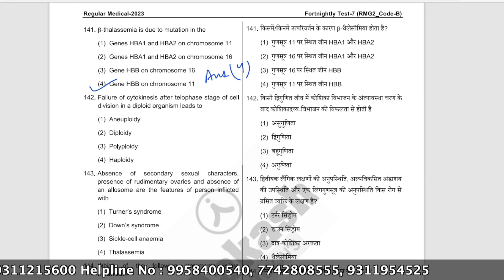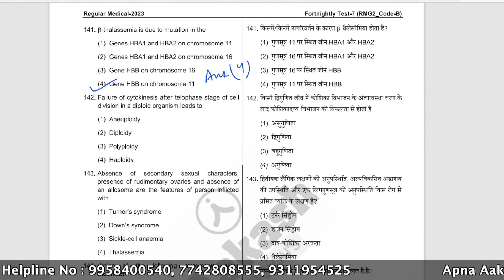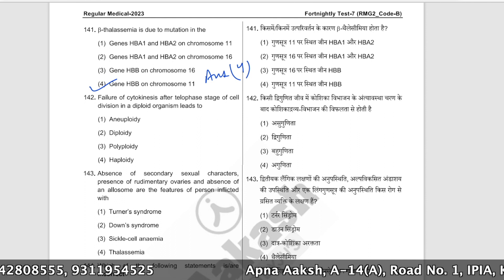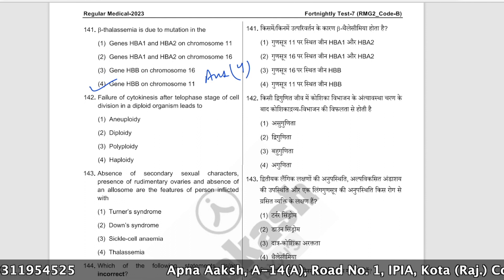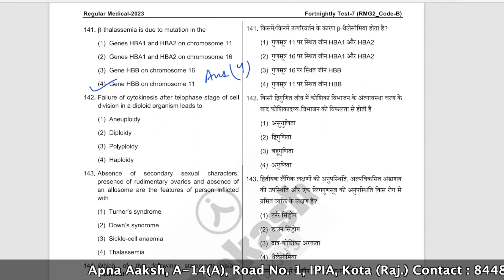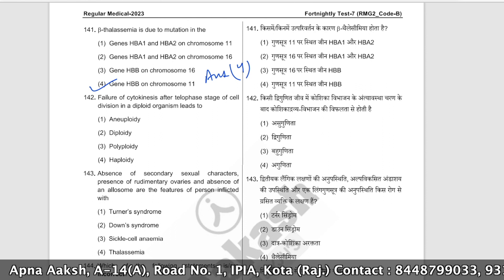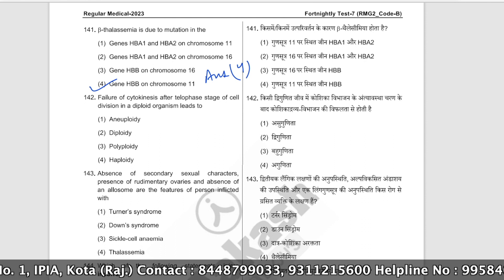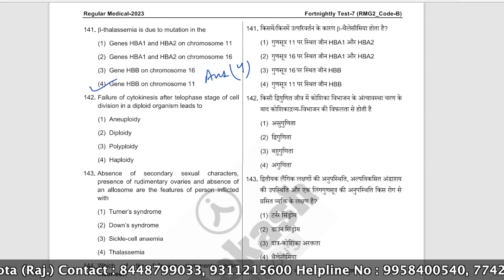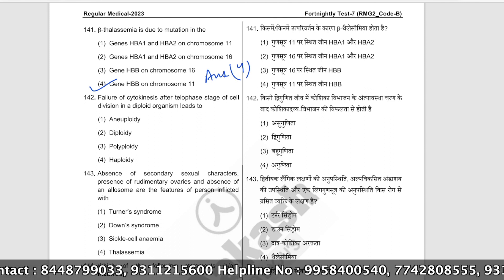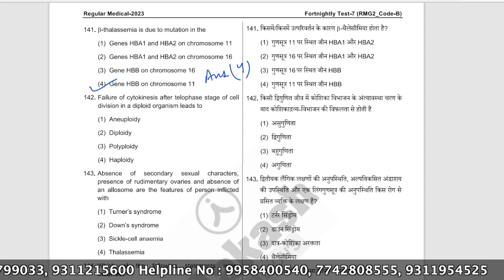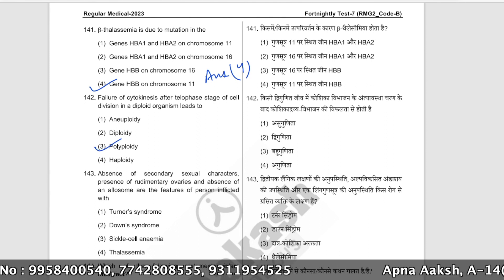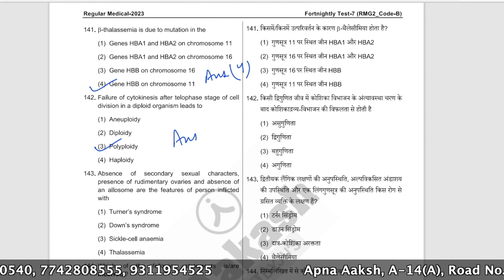Failure of cytokinesis after the telophase stage of cell division in a diploid organism leads to what condition? When the nucleus divides but cytokinesis fails, all chromosomes are retained in one cell — leading to a polyploid condition. The correct answer is option number three.